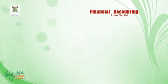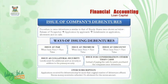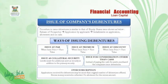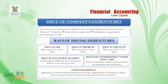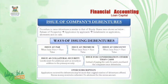Welcome back to the second segment of the financial accounting lesson. We are still on loan capital, focusing on debentures. In this second segment, we shall be looking at the issue of debentures. The procedure to issue debentures is similar to that of equity share issue: release of a prospectus, then application by applicants, then installment on application, and then allotment and calls.